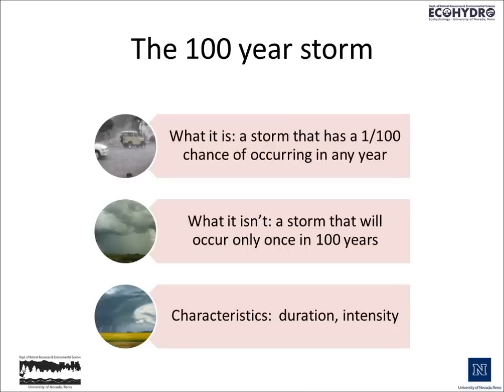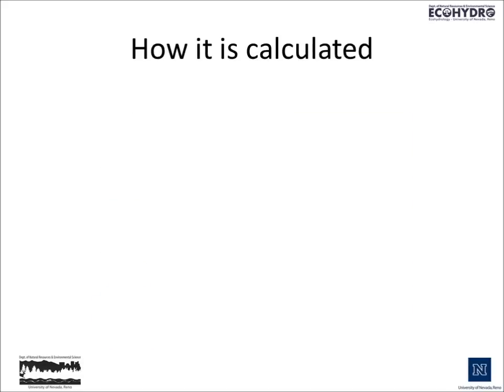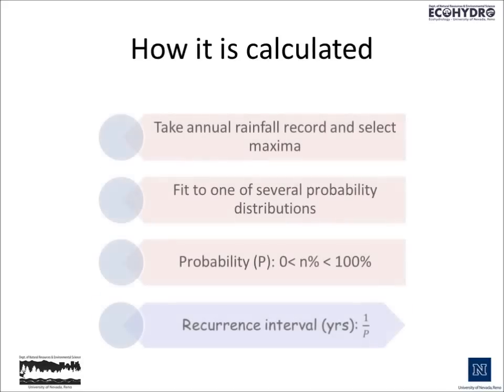By applying a statistical technique, we estimate that a specific storm with a certain duration and intensity has a 1 in 100 chance of occurring in any year. In order to calculate it, we take the annual rainfall record and select all of the maxima — all the maximum amounts — and we fit it to one of several probability distributions.